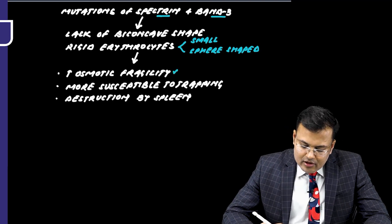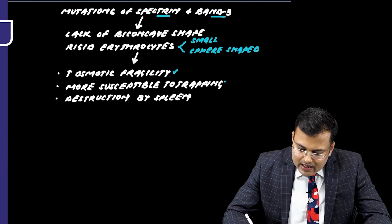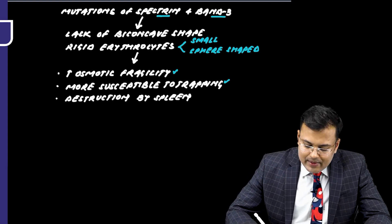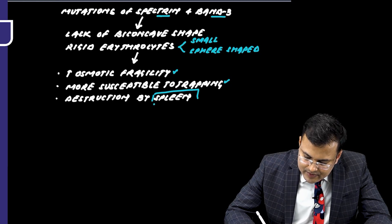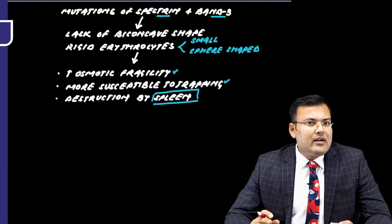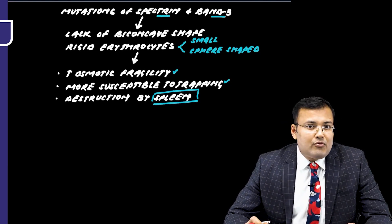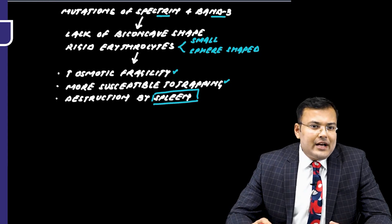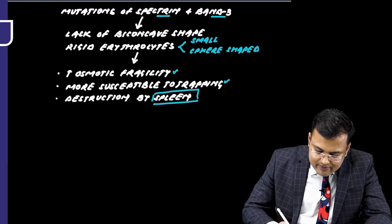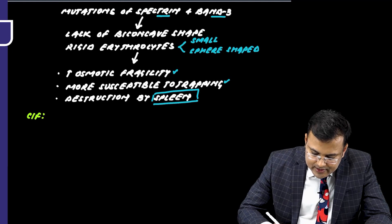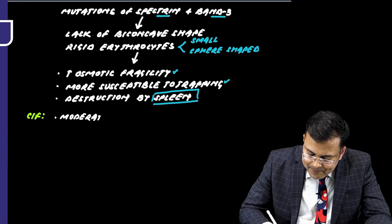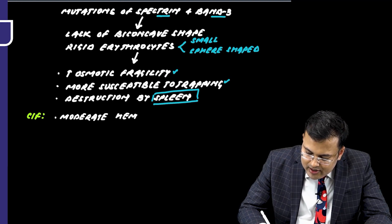Due to the lack of biconcave shape, RBCs are rigid, which causes increased osmotic fragility. These RBCs are more susceptible to trapping and are destroyed in the spleen, leading to moderate hemolytic anemia in these patients.